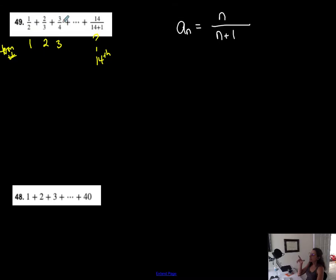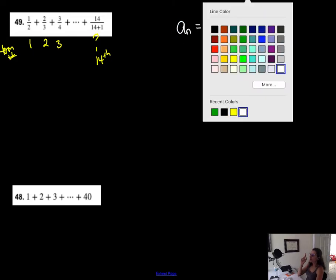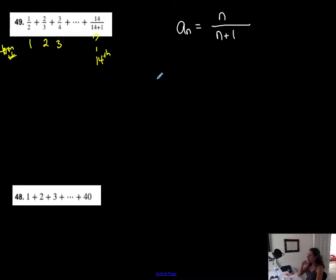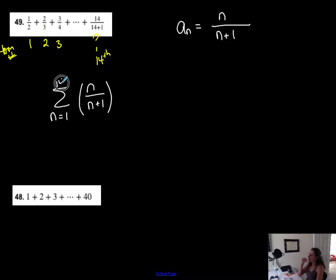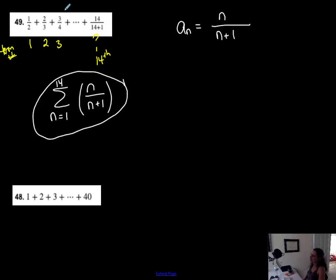The explicit form n/(n+1) is the formula for that sequence. To represent it in summation notation as a series, I take the sum of n/(n+1), starting at n=1 and ending at n=14. Double-checking: when n=1, I get 1/2 — correct. When n=14, I get 14/15 — that matches the last term. So this is the summation notation of the series.